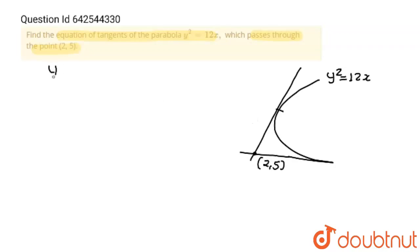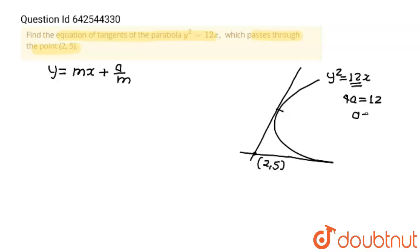So let's see. We know that the equation of all tangents on a parabola is in the form y = mx + a/m, and here 4a is equal to 12. So the value of a is equal to 3. So this will be y = mx + 3/m.